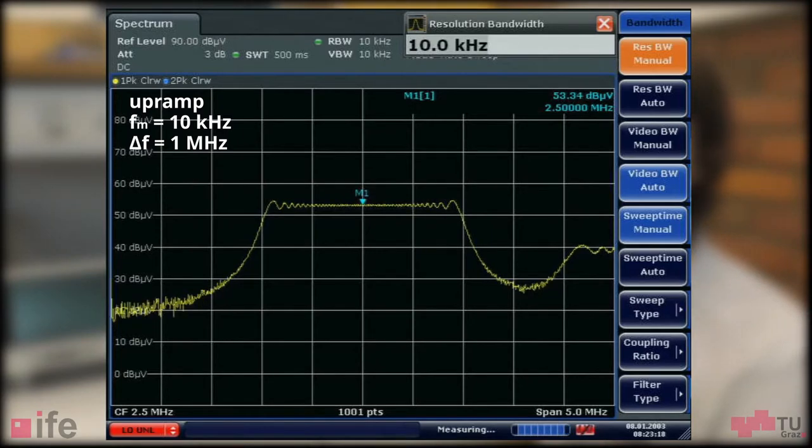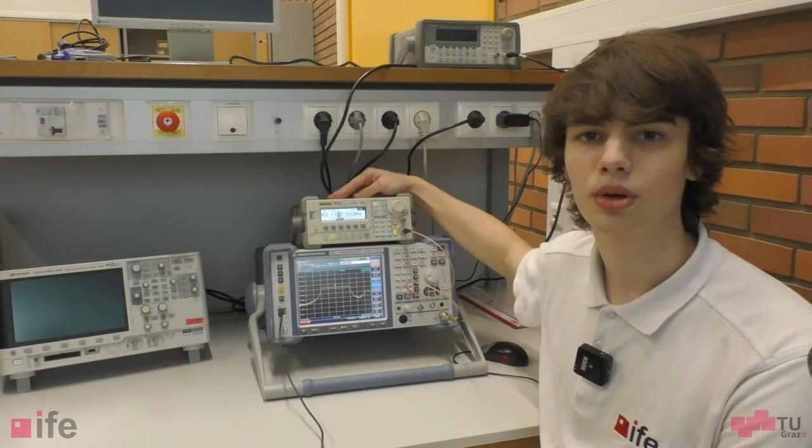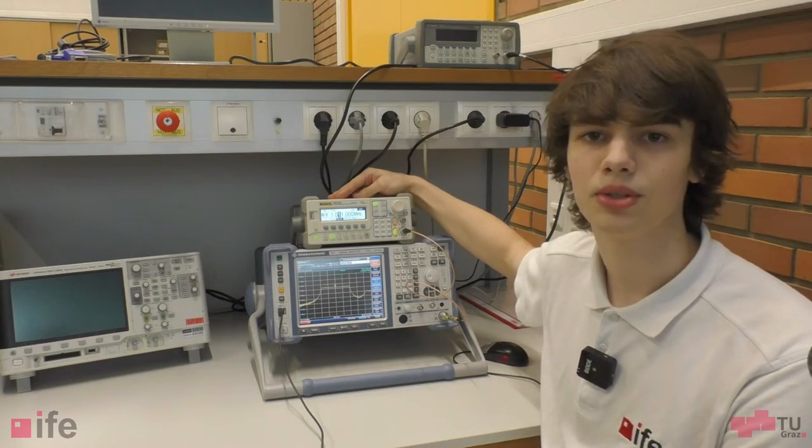As can be seen, increasing the frequency deviation spreads the spectral components of the modulated carrier over a broader frequency range and thus further reduces the signal amplitude.